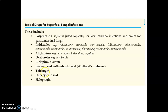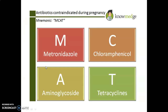Antibiotics contraindicated during pregnancy — mnemonic MCAT: M — metronidazole; C — chloramphenicol; A — aminoglycosides; T — tetracycline. That was all for today.